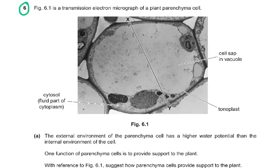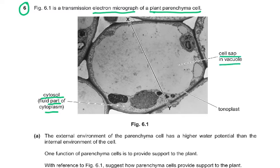Question 6: Figure 6.1 is a transmission electron micrograph of a plant parenchyma cell. The cytosol is the fluid part of the cytoplasm containing the organelles. The question also refers to the cell sap in the vacuole and the tonoplast, which is the vacuole membrane.